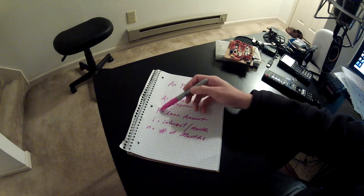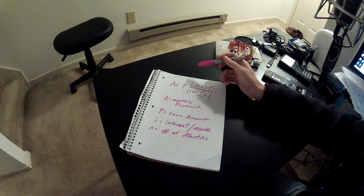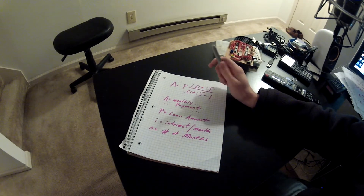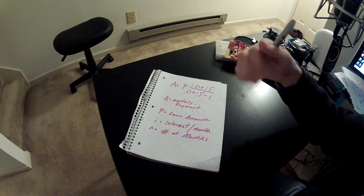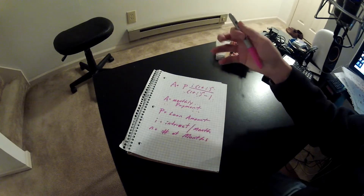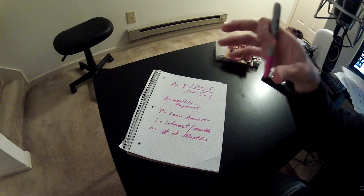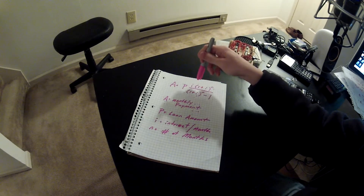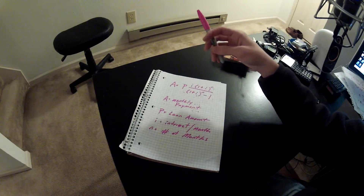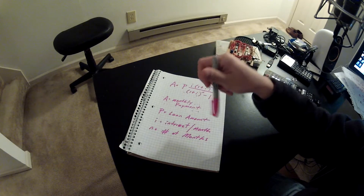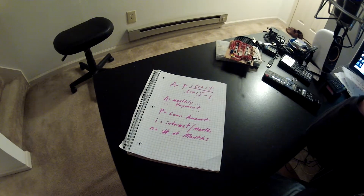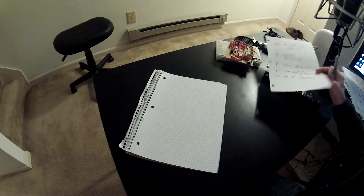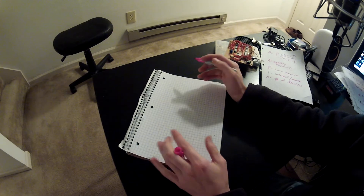P is the principal loan amount — that's how much money you borrowed from the bank at day zero. i is the monthly interest. You hear the term APR a lot, which is your annual percentage rate — that's your interest on the loan for the year. In this formula, you divide that percentage by 12. So if it was 12%, you divide by 12 and get 1%, or 0.01. n is your number of months, so a two-year loan would be 12 times 2, which is 24 months.